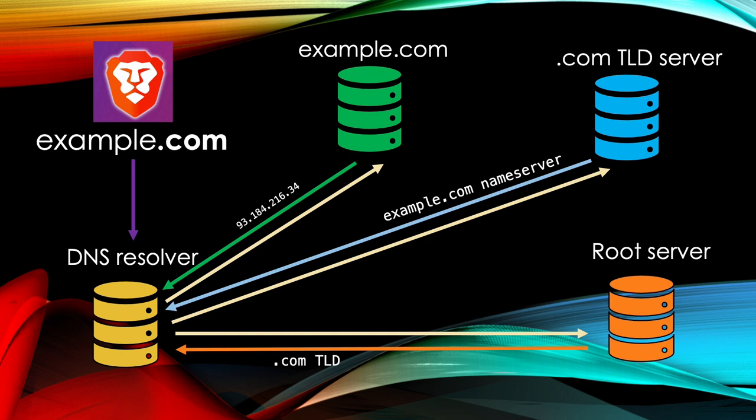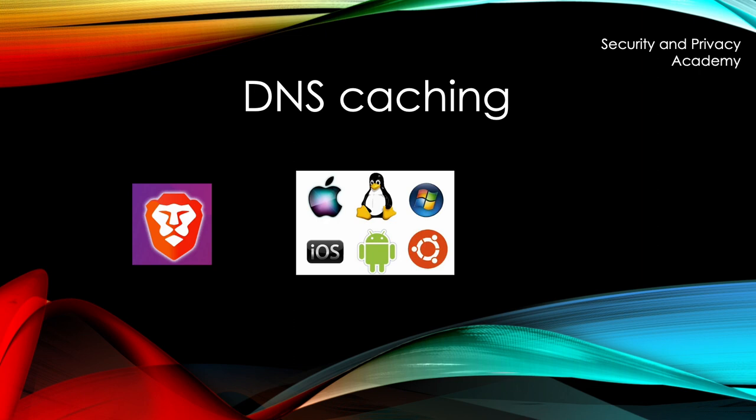The web browser can now directly communicate with the IP given to it. Note that this process is rather cumbersome, and in order to speed things up, entries of IPs and domain names are cached in the browser, in the operating system, and in the various DNS servers.